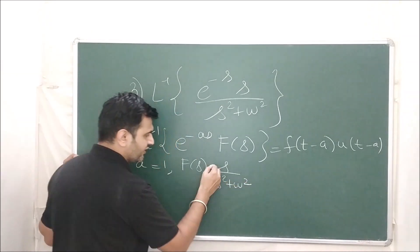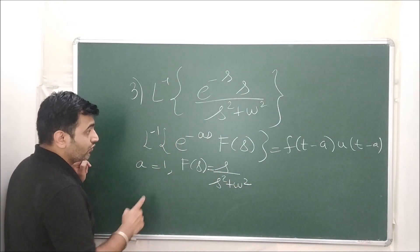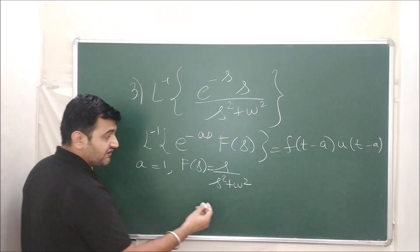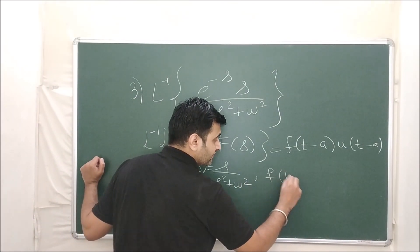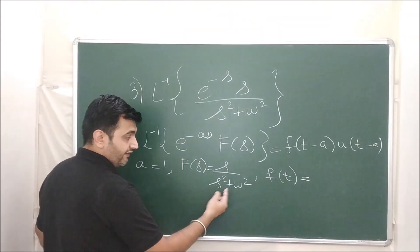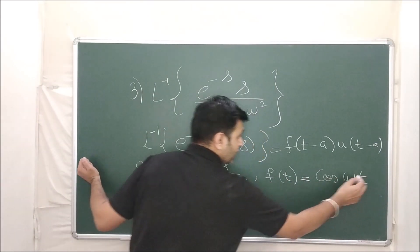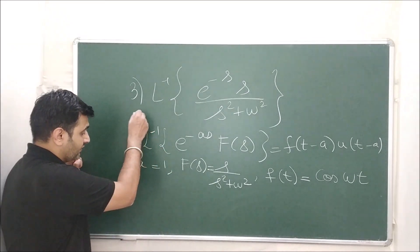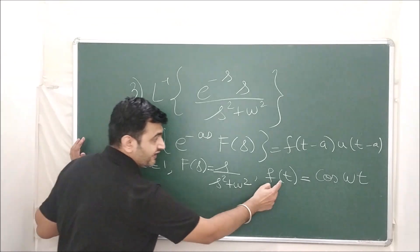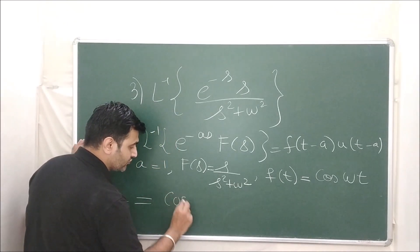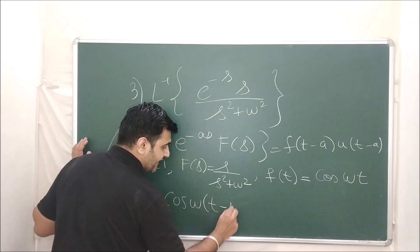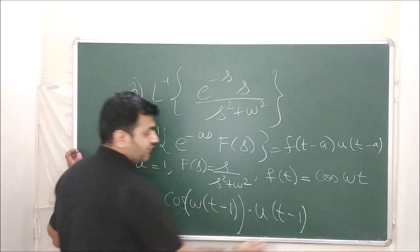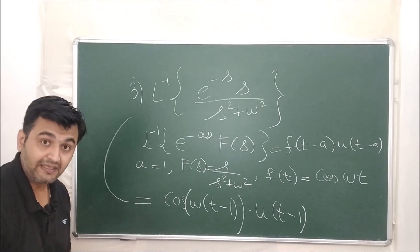Since F(s) = s/(s² + ω²), the function whose Laplace this is, is cos(ωt). So I have f(t) = cos(ωt) and a = 1. By the second shifting theorem, the Laplace inverse is f(t − a) = cos(ω(t − 1)) · u(t − 1). That's how you find the Laplace inverse — whenever it involves an exponential, think of the second shifting theorem.